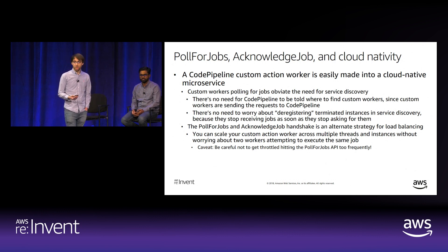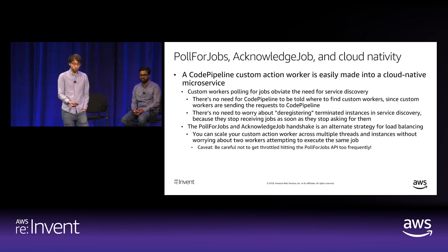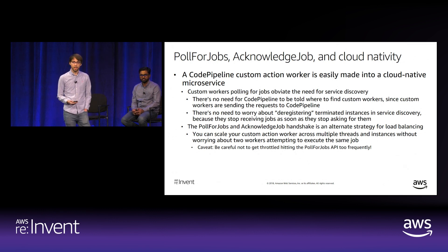The job acknowledgement handshake is also an alternate strategy for load balancing—you can scale horizontally across multiple threads or instances without worrying about two workers executing the same job. However, you can get throttled if you hit the PollForJobs API too frequently. If you have 100 different instances all implementing the custom action worker, you may need to develop a job queue system to avoid hitting the API too much.